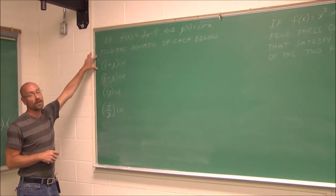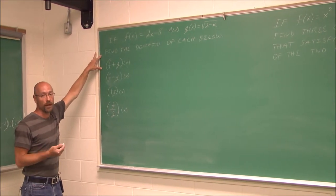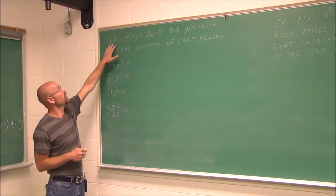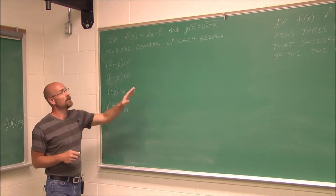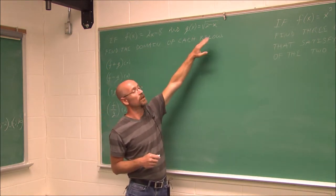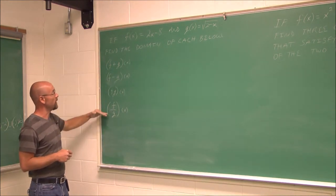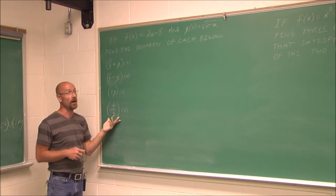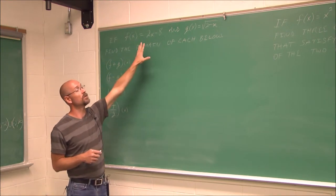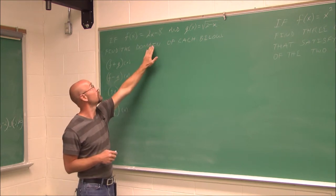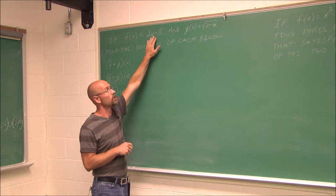Let's look at an important concept: domain. If we have f of x equals 2x minus 8 and g of x equals the square root of 2 minus x, we want to find the domain of each function. f of x is linear — no domain restrictions. g of x has a square root, and we can't take the square root of a negative in the real number system.